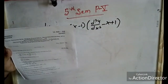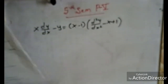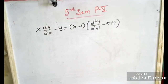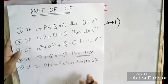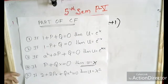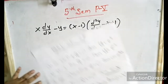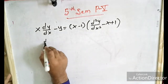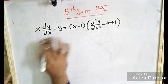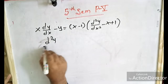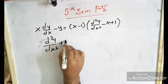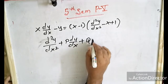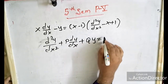Find the part of the complementary function for this DE. We will discuss how to find it. The first thing is this formula — first, make the standard form: d²y/dx² + P·dy/dx + Qy = R.